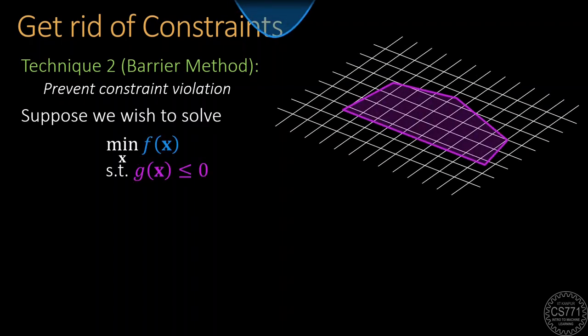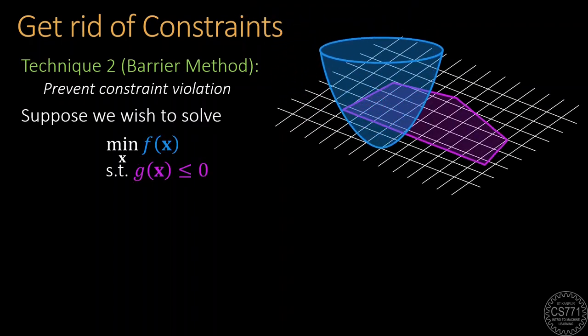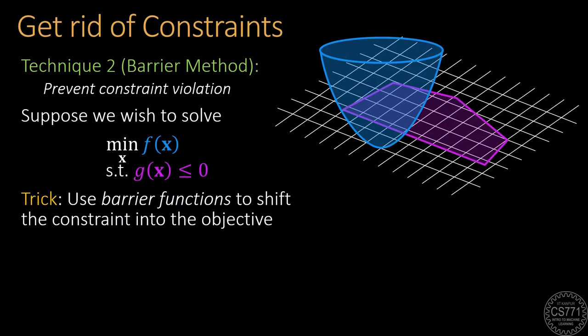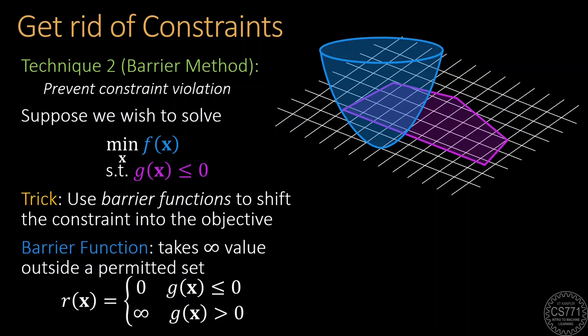Consider this cartoon optimization problem with the objective function f and a single constraint gx less than equal to 0 that results in the feasible set shaded in magenta color. The idea here is to create a function, let's say r, which takes the value 0 inside the feasible set and infinity outside the feasible set.